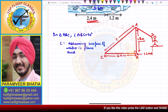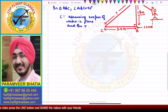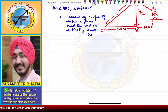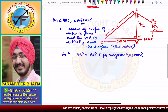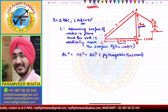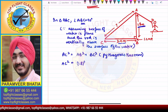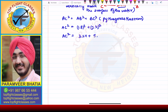Since angle ABC is 90 degrees, by the Pythagoras theorem, AC² = AB² + BC². We do not have the length of AC — it is the length of the string. AB is given as 1.8 meters and BC is given as 2.4 meters. So AC² = 1.8² + 2.4².